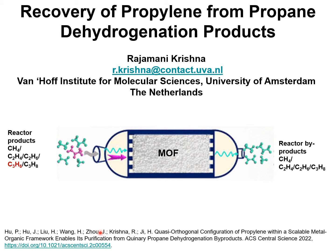The objective of this presentation is to consider a separation scheme in which propylene is selectively absorbed from the five-component mixture in a fixed bed absorber packed with a metal-organic framework. For further background, refer to the publication in ACS Central Science that is available online.